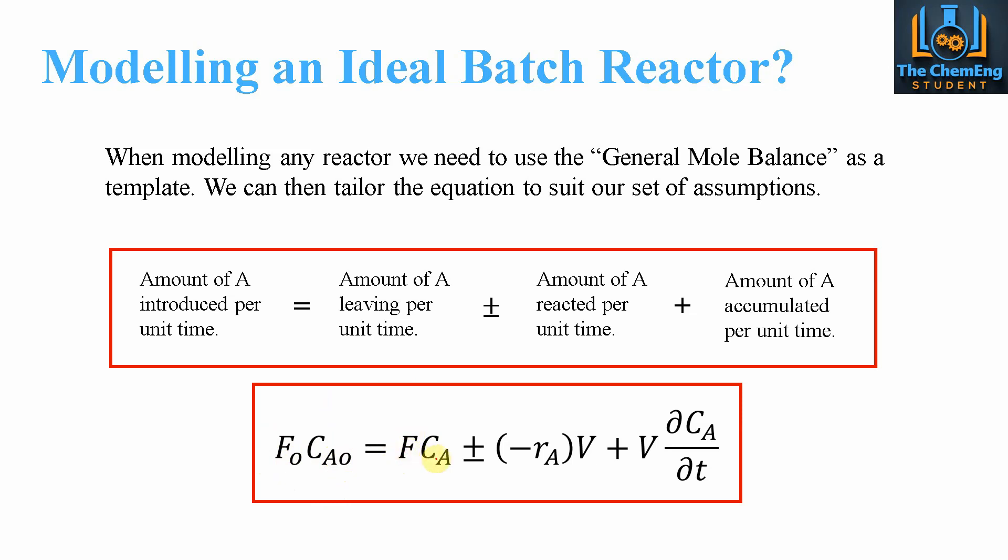Plus or minus the rate of the reaction, -rA, multiplied by the volume of the reactor, plus the volume of the reactor multiplied by the partial differential of Ca over dt.